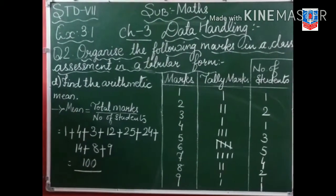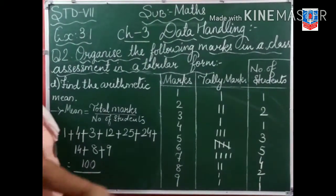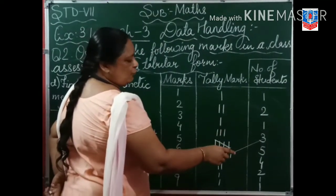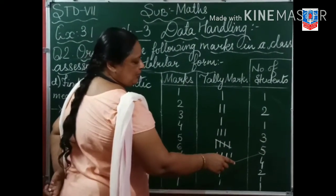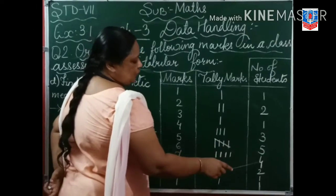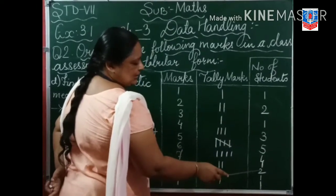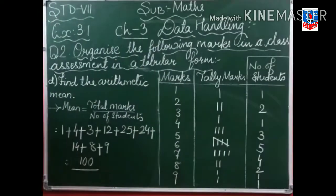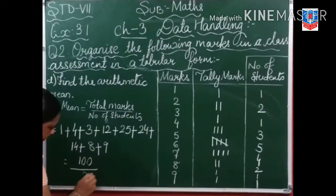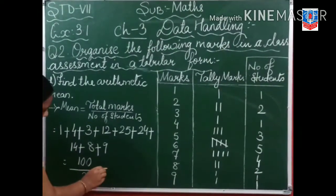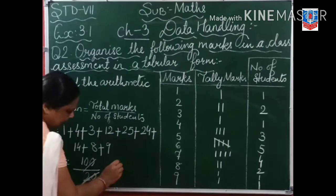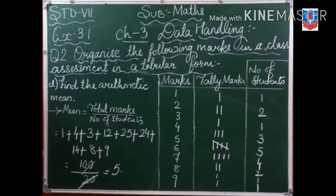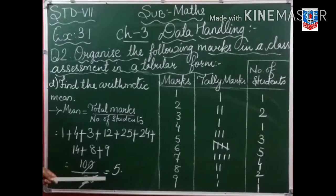So one hundred divided by number of students. One plus two is three, three plus one is four, four plus three is seven, seven plus five is twelve, twelve plus four is sixteen, sixteen, eighteen, nineteen, and twenty. When we divide, we will get five. So arithmetic mean of this data is five.